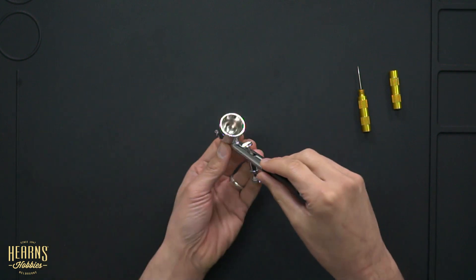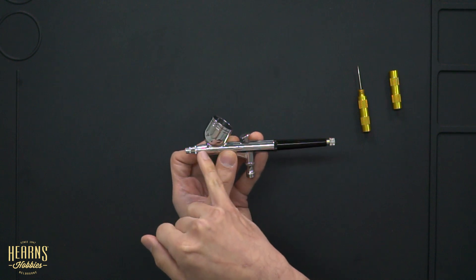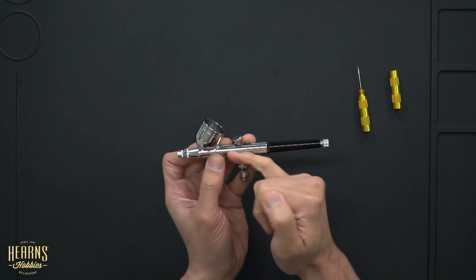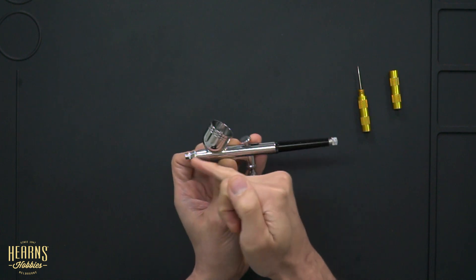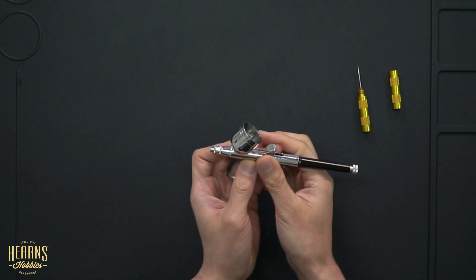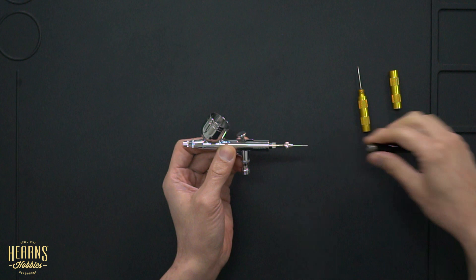Generally, you load the paint in through a gravity cup here, and as the paint is drawn through this point, the air coming up from the hose is creating a suction action, pulls it through, and then blows it out the front. Now, there's a small nozzle in there. Let's just dismantle this first, so I'll give you a better idea.